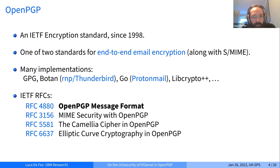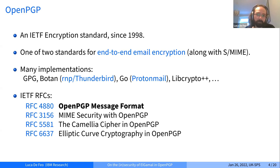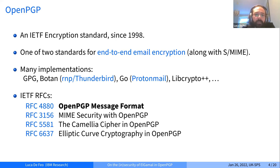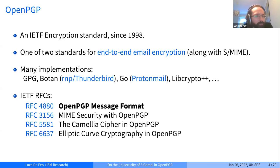There are many implementations of the OpenPGP standard. The most popular is GPG — the GNU Privacy Guard — a C implementation that is nearly the reference implementation. Other important implementations include Botan, used by Mozilla Thunderbird; Go, used by ProtonMail; and LibCrypto++. OpenPGP is specified in RFCs: the main one is RFC 4880, the OpenPGP message format, along with RFC 3156 for email use, and extensions for Camellia cipher and elliptic curve cryptography.